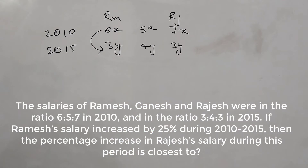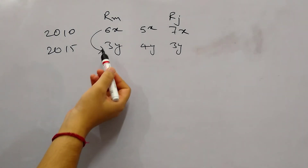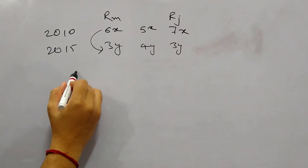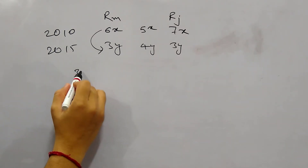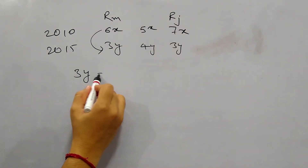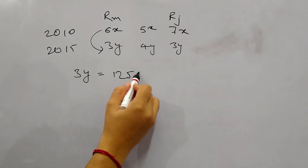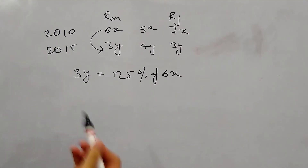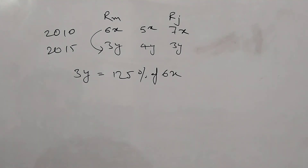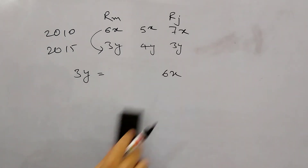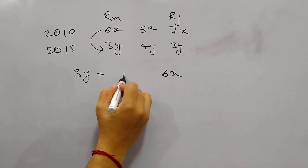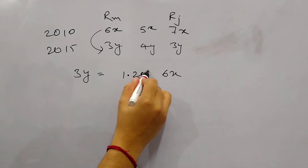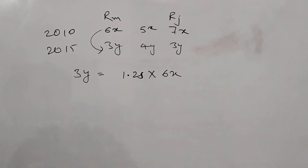This is a very simple question. Ramesh's salary is increased by 25%, that means the current salary 3y is 125% of 6x. So we can write it as 3y = 1.25 × 6x.